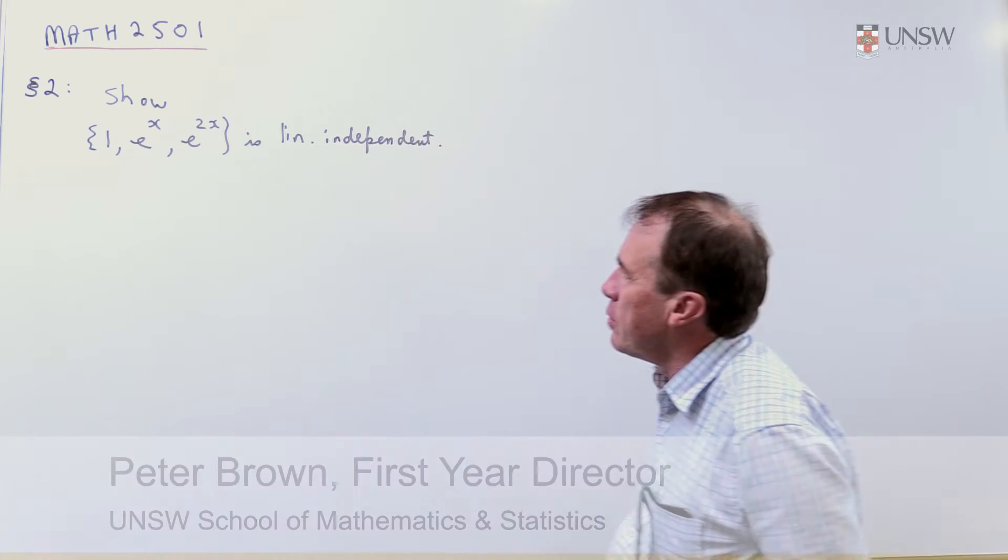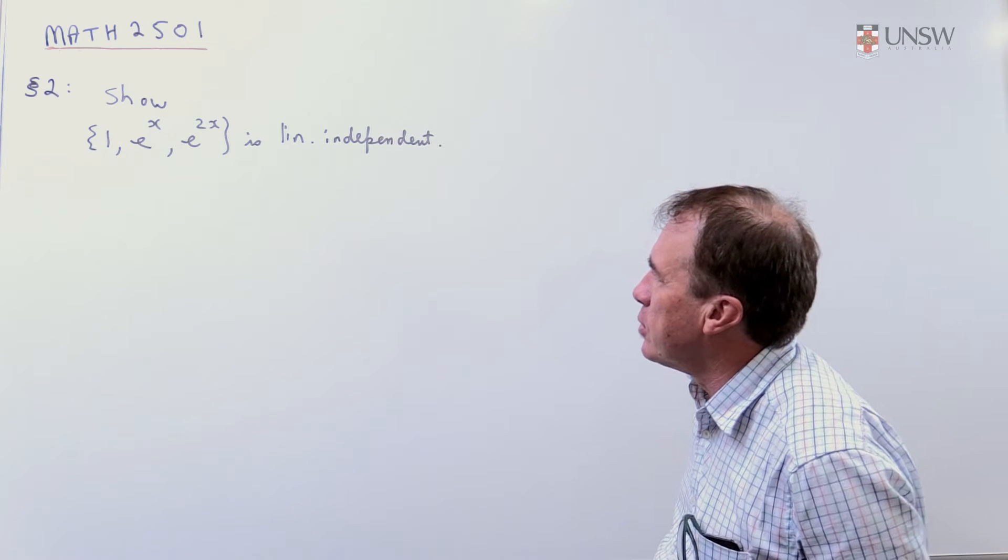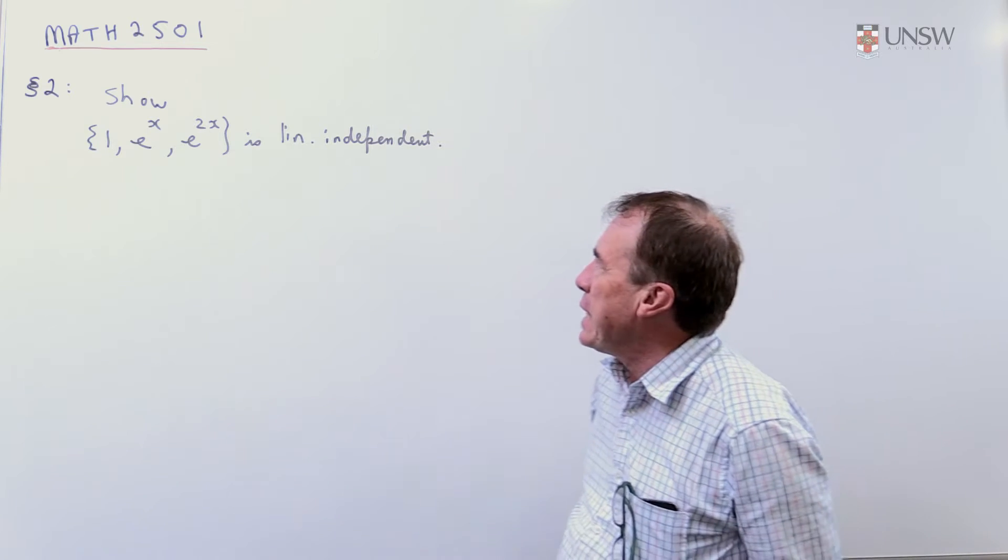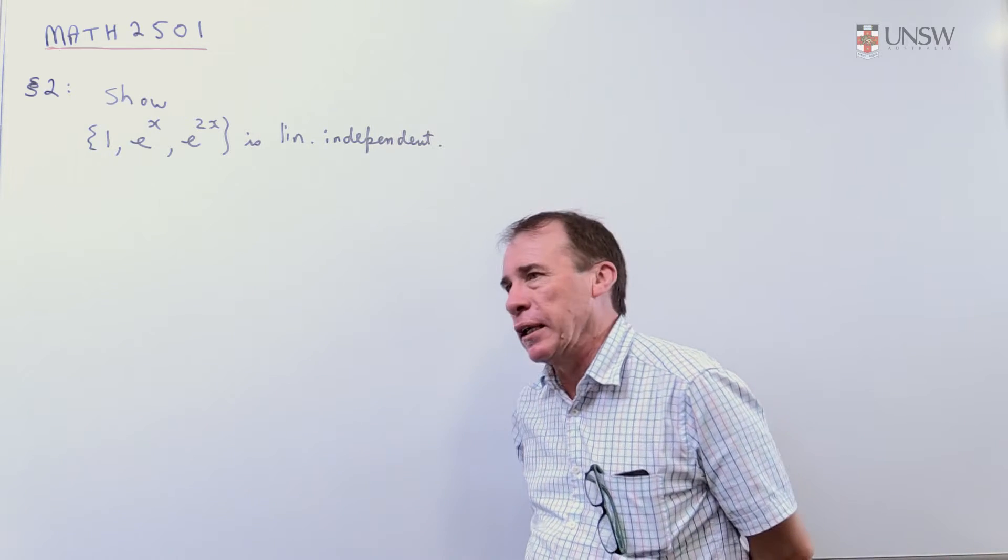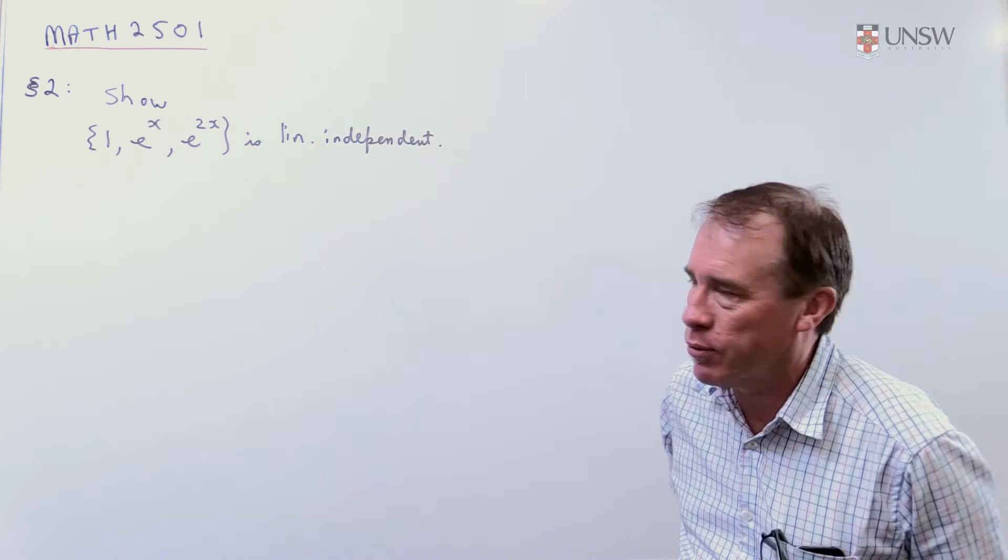Okay, the second problem from chapter 2. We're given a set of functions. The question's a little bit vague in the notes, it just says show that this is linearly independent, gives you a little hint, it says use differentiation, which I will in a moment.